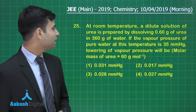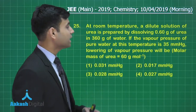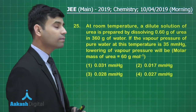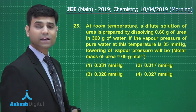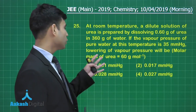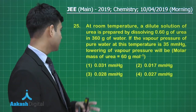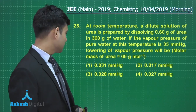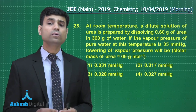The next question says: at room temperature, a dilute solution of urea is prepared by dissolving 0.6 gram of urea in 360 gram of water. If the vapor pressure of pure water at this temperature is 35 mm of Hg, the lowering of vapor pressure will be — these are the options given.